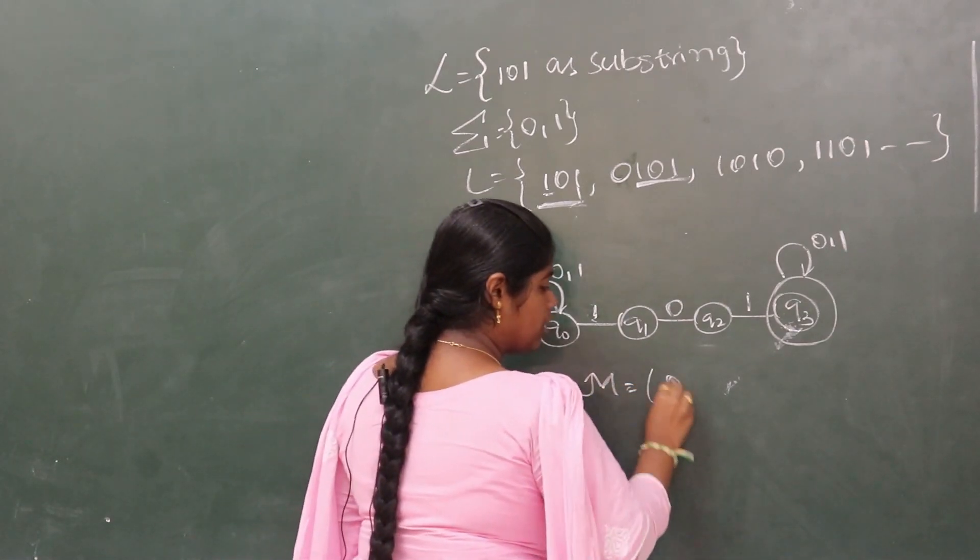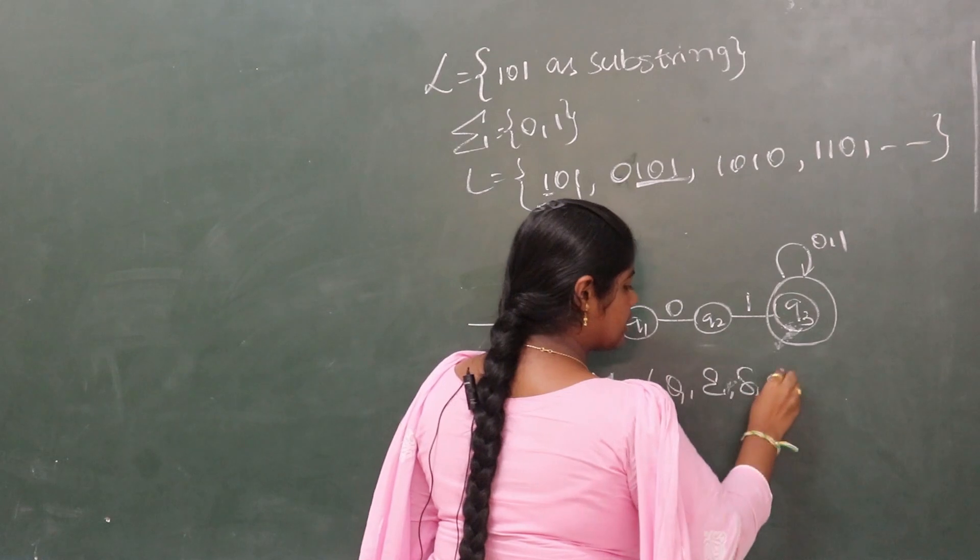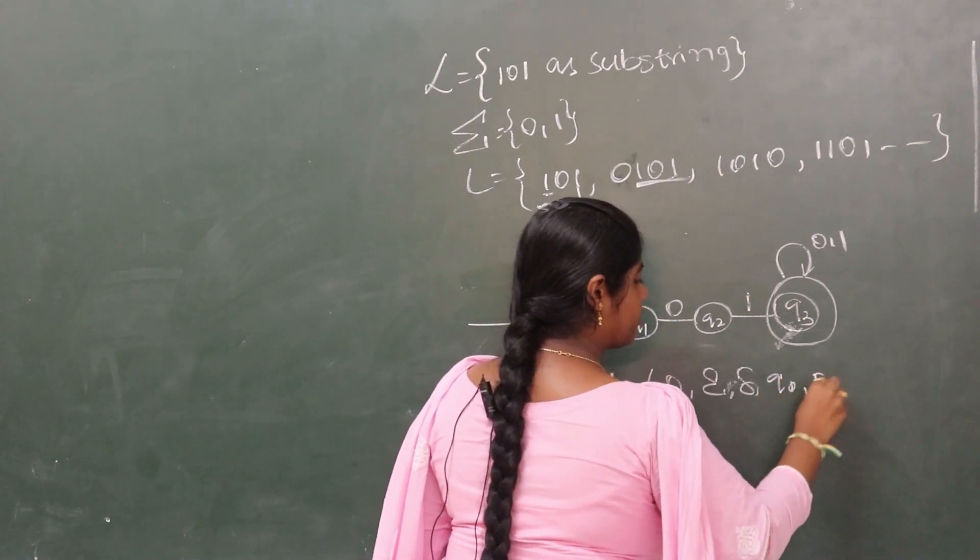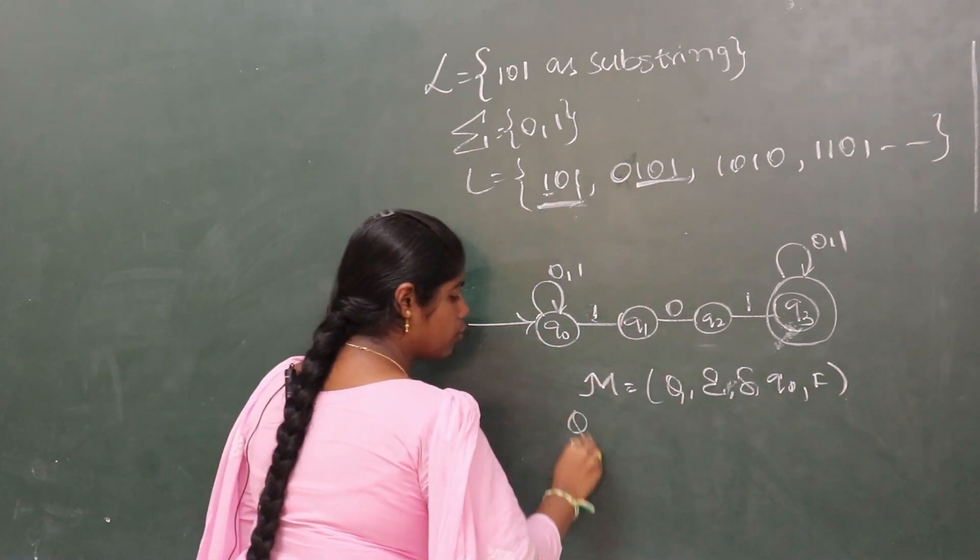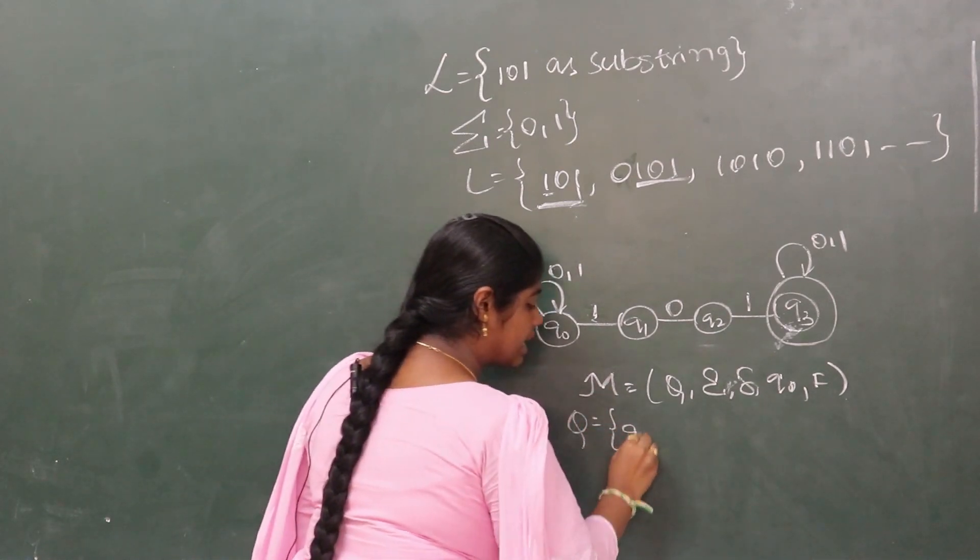Now we need to write the five tuples. The five tuples are Q, sigma, delta, q0, F. Q is the set of states.